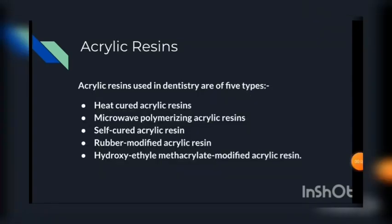In denture base materials we most commonly use acrylic resins. Acrylic resins used in dentistry are of five types: number one, heat cured acrylic resin; number two, microwave polymerizing acrylic resin; number three, self cured acrylic resin; number four, rubber modified acrylic resin; and the last one is hydroxy ethyl methacrylate modified acrylic resin.